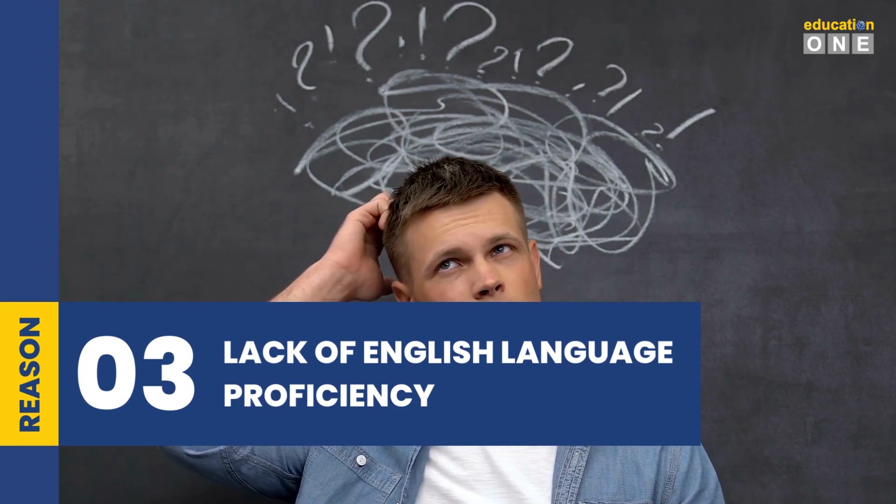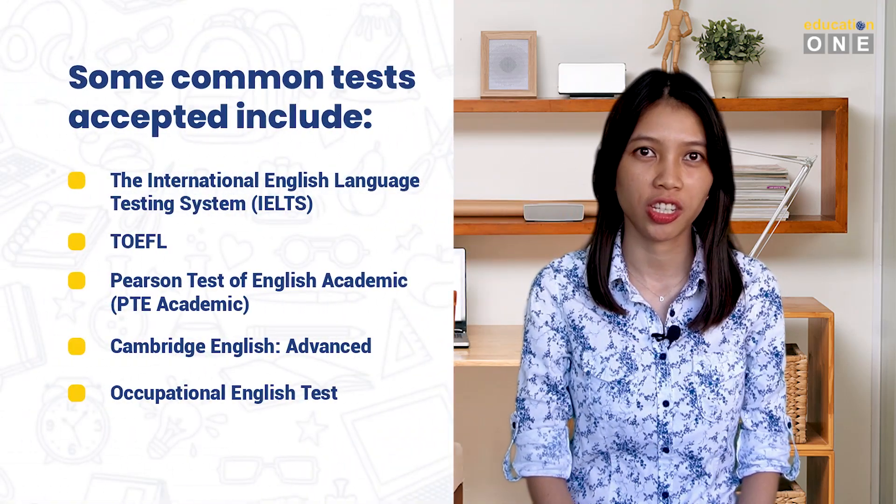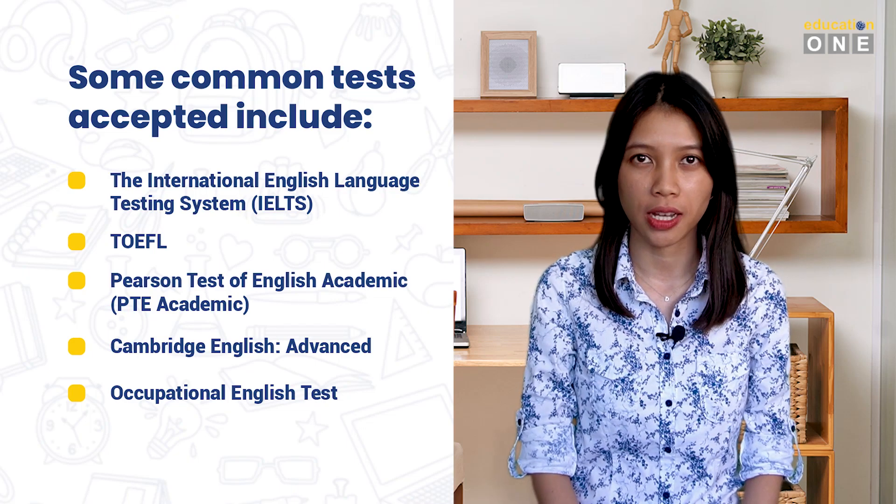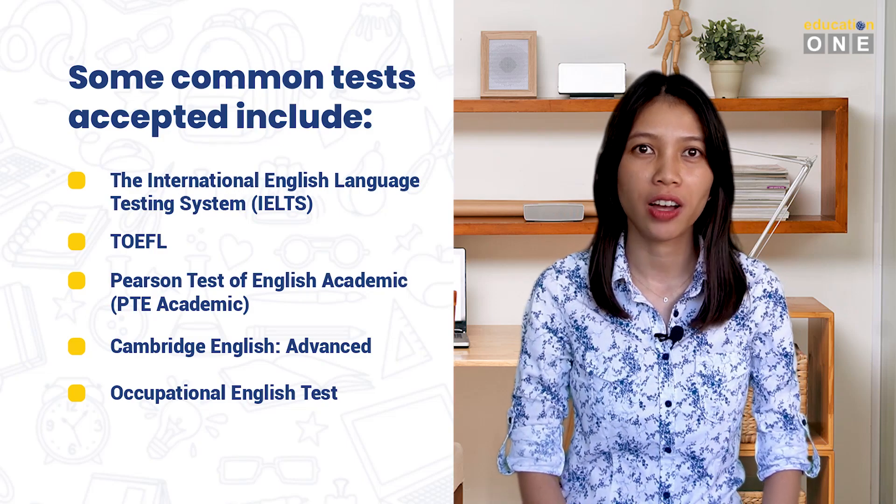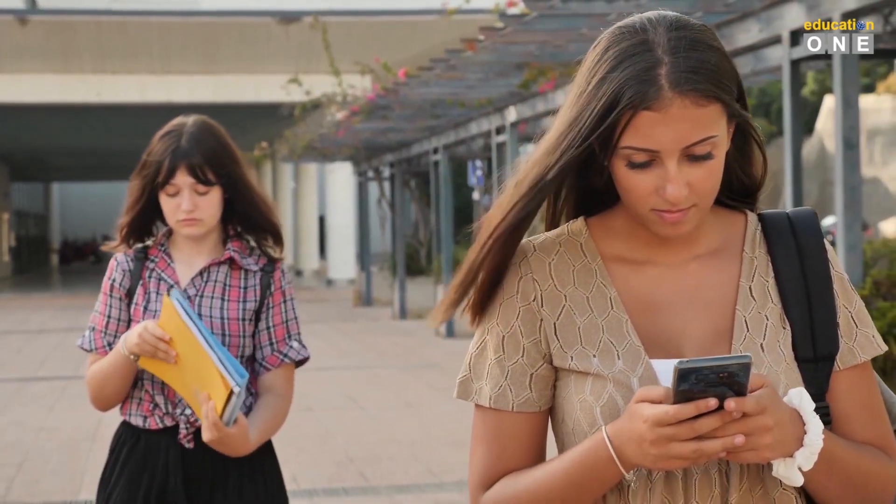Reason number three: lack of English language proficiency. Proficiency in English is crucial for academic success and everyday life in an English-speaking country like Australia. When applying for a student visa, you must submit English test results that meet the minimum score requirements. Common tests accepted include IELTS, TOEFL, PTE Academic, Cambridge English Advanced, and the Occupational English Test. Our Study with ELICOS package allows you to enroll in an English language intensive course for overseas students alongside your desired degree program, helping you enhance your English skills while progressing towards your educational goals.